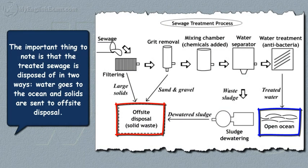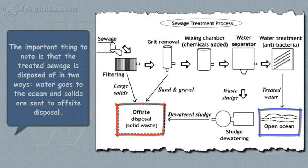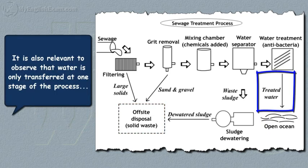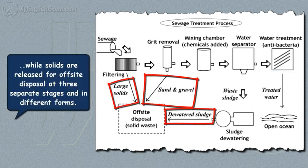The important thing to note is that the treated sewage is disposed of in two ways: water goes to the ocean and solids are sent to off-site disposal. It is also relevant to observe that water is only transferred at one stage of the process, while solids are released for off-site disposal at three separate stages and in different forms.